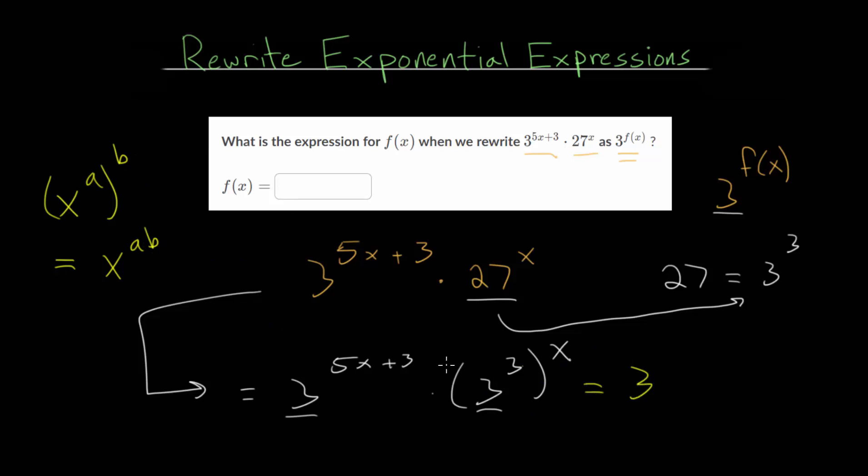So, we can use that idea here. I'll just, again, rewrite that first expression. So, 3 to the 5x plus 3. And, for the second one, since we have 3 to the 3rd raised to the x, an exponent to an exponent, we're going to multiply. So, this is just 3 to the 3x.